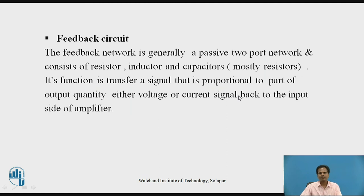The next element of the feedback amplifier is the feedback circuit. The feedback network or feedback circuit is generally a passive two-port network consisting of resistors, inductors, and capacitors. Mostly in amplifiers, the feedback network consists of resistors. Its function is to transfer a signal proportional to part of the output electrical quantity — either voltage or current — back to the input side of the amplifier.